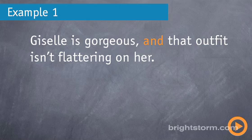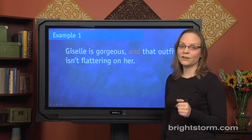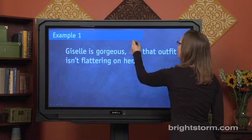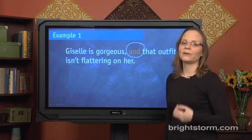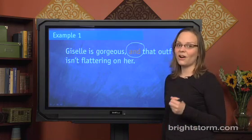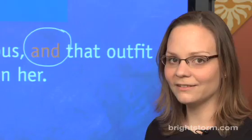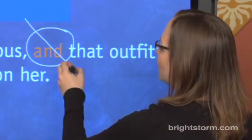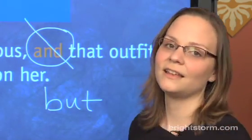Let's look at some examples. 'Giselle is gorgeous, and that outfit isn't flattering on her.' Now the sentence isn't grammatically incorrect, but stylistically and logically it's very weak, so it would be a bad answer choice on the SAT. 'And' is a coordinating word that suggests the two pieces should be similar or in the same vein, but they're not — 'Giselle is gorgeous' contrasts with 'she doesn't look good in the outfit.' So we'd want a contrast word like 'but' or 'yet.'